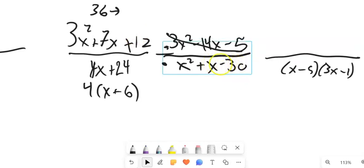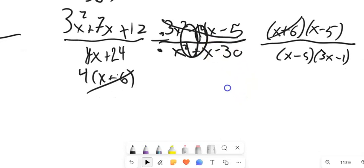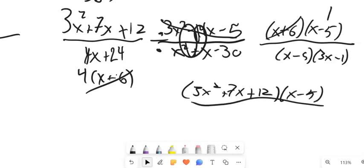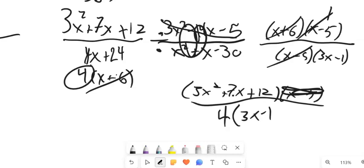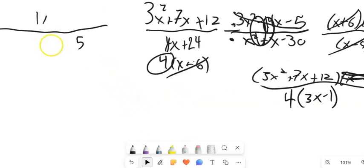And then this one, things that multiply to negative 30, add to 1 would be 6 and negative 5. So, let's see. The x plus 6s will cancel. And that's it. So, notice what I'm left with is that whole top times that x minus 5 over, I had a 4 left down here, and an x, oh, x minus 5 goes. I missed that. Darn it. That's gone. 3x minus 1. All right. And there is a lovely mess for you. So, go ahead, post any questions that you have. Give that assignment set a try. Bye-bye.